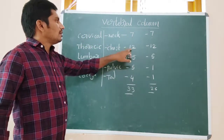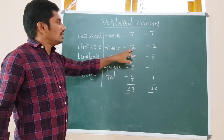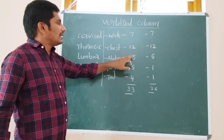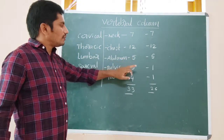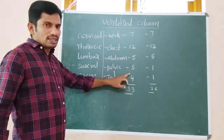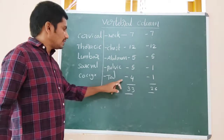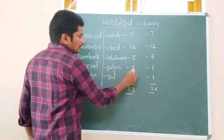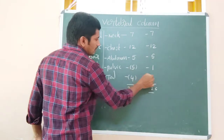In total: 7 cervical plus 12 thoracic equals 19, plus 5 lumbar equals 24, plus 5 sacral equals 29, plus 4 coccyx equals 33. But in adults, the sacral and coccyx are fused, giving 26 vertebrae total in an adult.